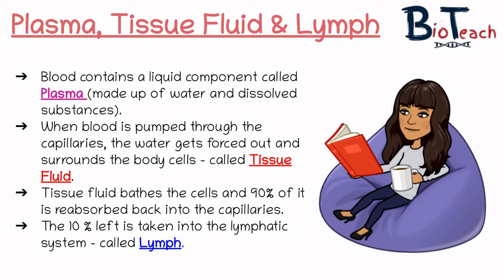Blood contains the liquid component called plasma, which is made up of water and dissolved substances — things like hormones, ions, and smaller monomers such as glucose and amino acids. When blood is pumped through the capillaries, water from the capillaries will get forced out and surrounds the body's cells, and at that point that water is known as tissue fluid because it's entered the tissues.